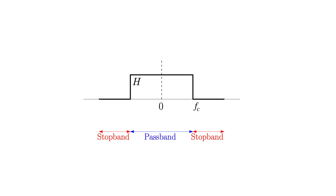This is what an ideal low pass filter looks like in the frequency domain. Essentially what this is showing is that any frequencies below the cutoff frequency F sub C are passed through with a unity gain, but any frequencies beyond that cutoff frequency are attenuated down to zero.